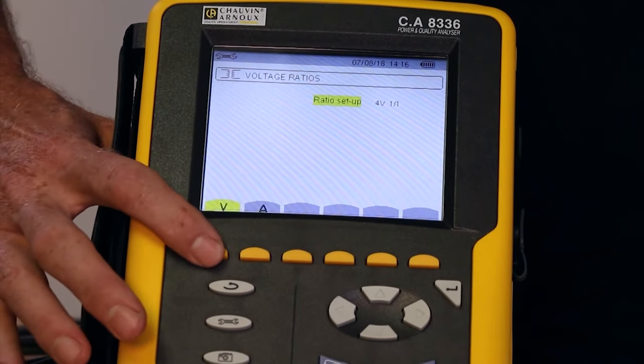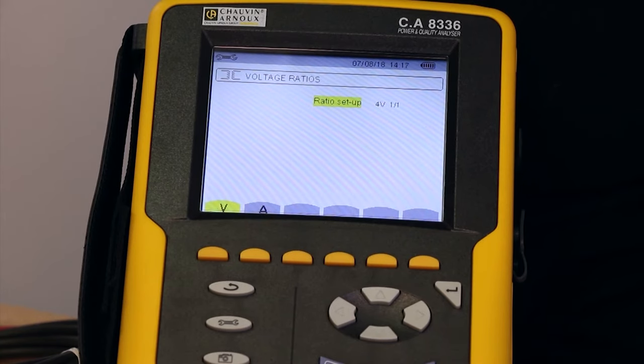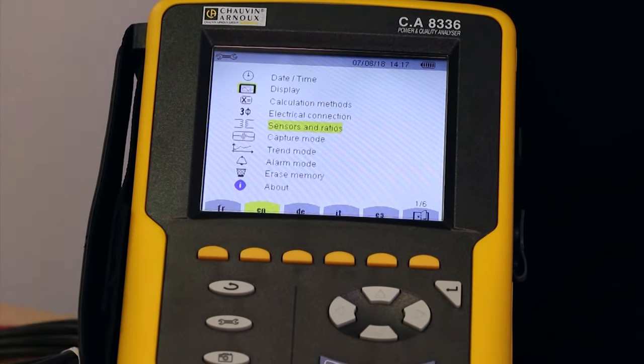On this screen, you can also set the transformer ratios for high voltage supply connections. But for low voltage connections of 220V or 400V phase to phase, there'll be no ratio here.